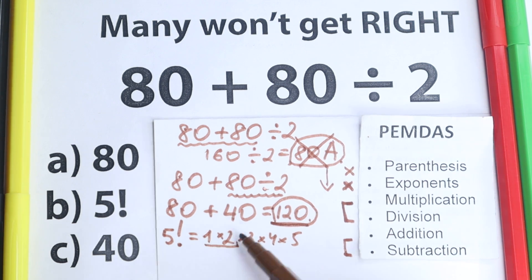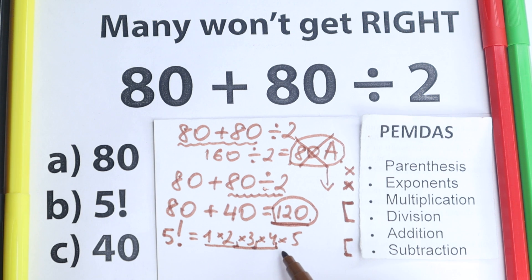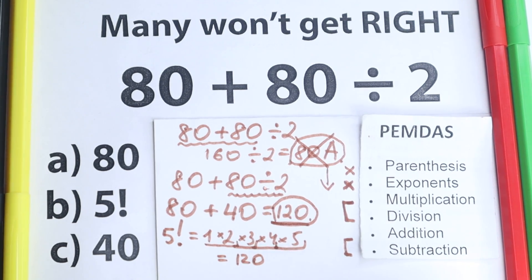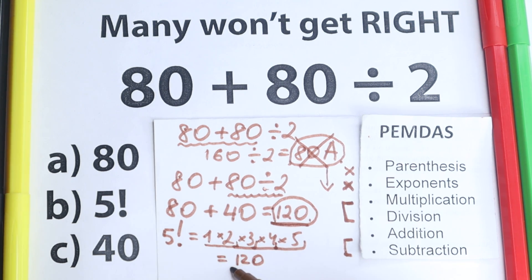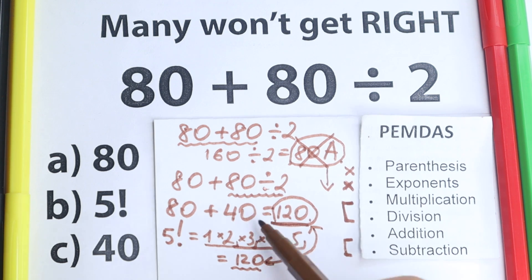So 1 times 2, we have 2, 2 times 3, 6, 6 times 4, 24, and 24 times 5, let's multiply it in our head, 24 times 5 equal to 120. And this is really great, because this 5 factorial, this is the same as 120, and this 120, this is absolutely the same as our answer according to PEMDAS.